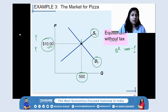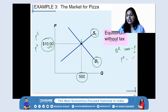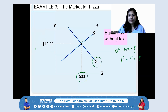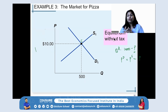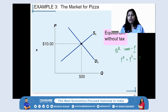The price paid by demanders equals the price received by suppliers — it's the same single price. When there was no taxation, we didn't need to separate producer price from consumer price. Now, when there is tax, there will be a difference between the price consumers pay and the price producers receive.